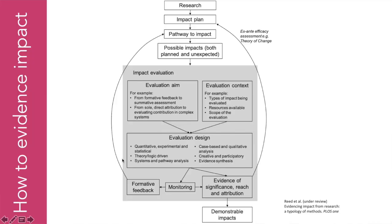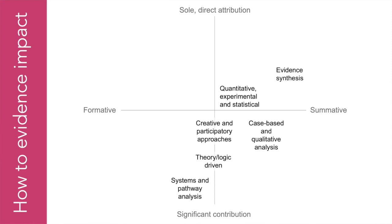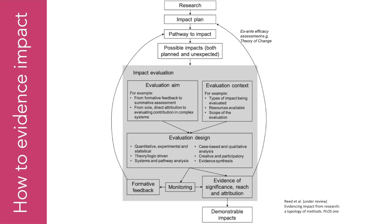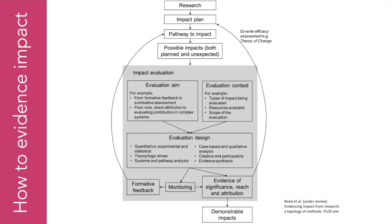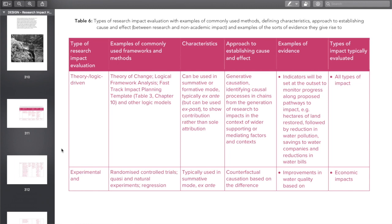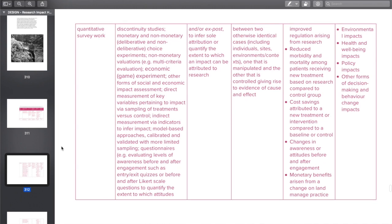Ask yourself which of these might be most relevant. Two things help: first, what is my aim? Second, what is the context? Looking at the two-by-two matrix in terms of aim: some methodologies give formative feedback as you go to help you do a better pathway, while others are summative and tell you at the end of your project whether it worked. Some are better at giving a sole direct attribution, whereas others evaluate the messy complexity of the reality of a circuitous pathway to impact. Context also matters — some are more appropriate for certain types of impact, and some are more resource intensive depending on the scope of the evaluation.